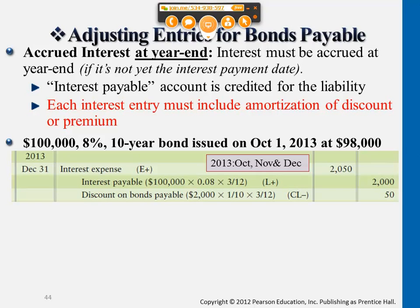We have interest payable here, calculated by the face value — still $100,000 — times the interest rate 8%, and then for three months only. This is the interest we owe to bondholders, but since it's not the pay date yet, it's just considered payable, not cash. Also, we only amortize discount on bonds payable for three months, for $50 only.